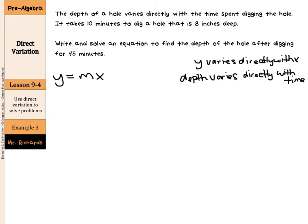So, we have our 10 minutes and we have our 8 inches. Now, the 10 minutes represents the time, which is our X in our statement. And the 8 inches represents our depth, which is our Y in this statement. So, we can say 8 for Y equals M times 10. Now, to finish solving for M, if we divide by 10 on both sides of our equation here, we end up with 8 tenths equals M.